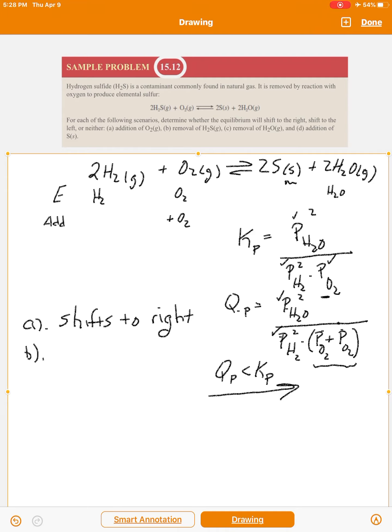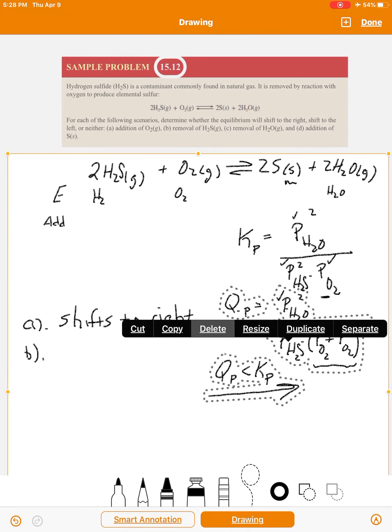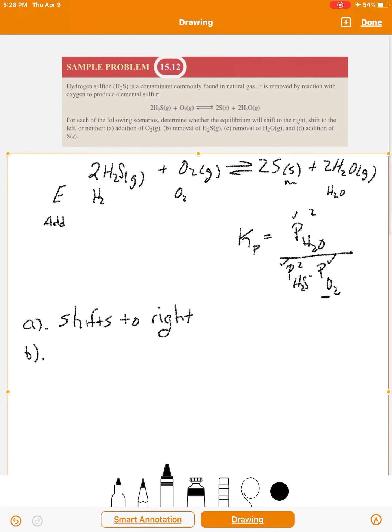In part (b) we're going to remove some H2S. Okay, we're going to remove H2S. Now let's do a new Q. So we have the expression for KP - it's right here. And let me actually get rid of some of these checks just so it's not so busy.